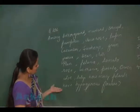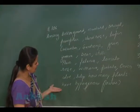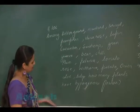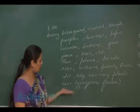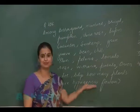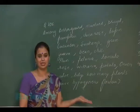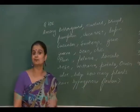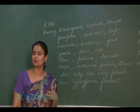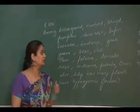Now, amongst these options, we have to see, among these examples, how many have hypogynous flowers. It means they have superior gynoecium, superior ovary.